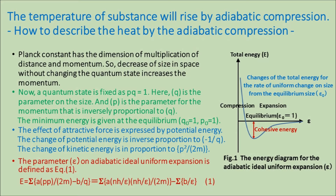The temperature of a substance will rise by adiabatic compression. To describe the heat by adiabatic compression, the following is proposed: the Planck constant has the dimension of multiplication of distance and momentum, so a decrease of size without changing the quantum state increases the momentum. A quantum state is fixed as P times Q equals 1, where Q is the parameter on the size and P is the parameter for momentum, which is inversely proportional to Q. The minimum energy is given at the equilibrium, that is Q0 equals 1, P0 equals 1.